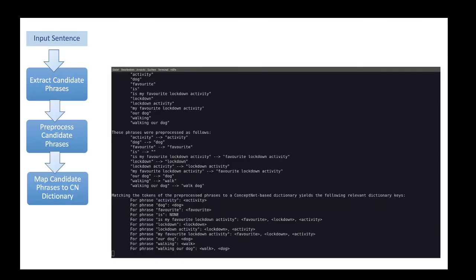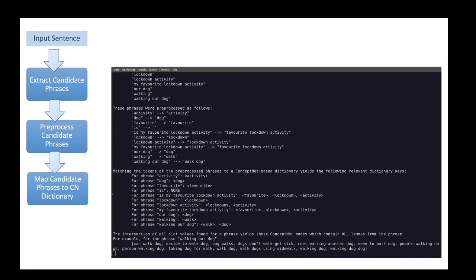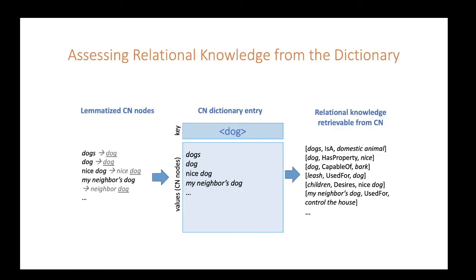In step 3, we then map the extracted and preprocessed phrases to our dictionary. This all happens automatically in CocoaX with the initial command. By doing this, we are able to assess the maximum of relational information stored in the ConceptNet knowledge graph for a given candidate phrase from a text, since it allows us to jointly look up the in- and outgoing edges of all nodes assigned to the same key.